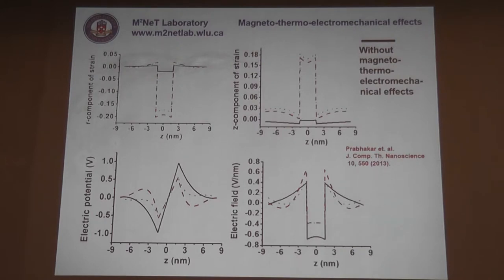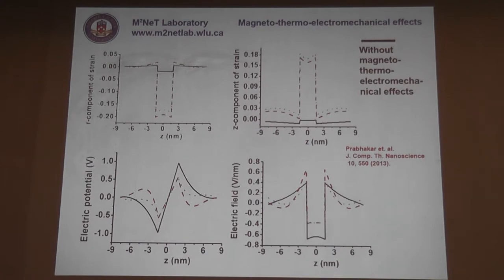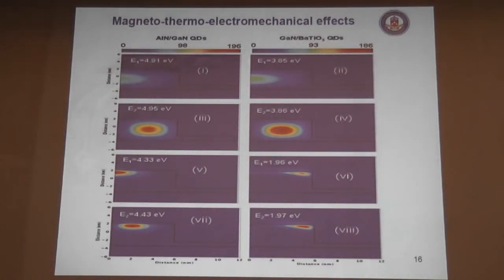Finally, related to coupled effects, you have to account for magnetic fields as well. So altogether we are talking about magneto-electromechanical coupling. What is in black everywhere represents, for example, different components of strain, electric potential, or electric field without coupling. What you see in green or red, dotted, represents this coupling for different types of materials. You could quantify that for different types of structures, not only for superlattices but for quantum dots as well — aluminium nitride, gallium nitride, and this type of quantum dot.